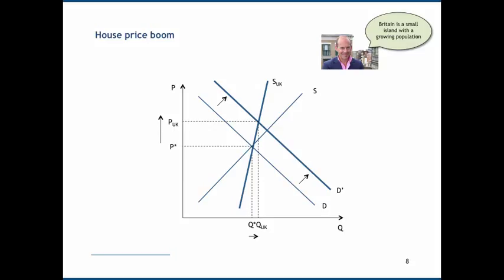We can extend this a little bit further and say, let's consider a country where supply is not so constrained. For example, a large island with a small population is somewhere like Australia. Let's imagine that Australia has a far more elastic supply curve; it's far flatter.